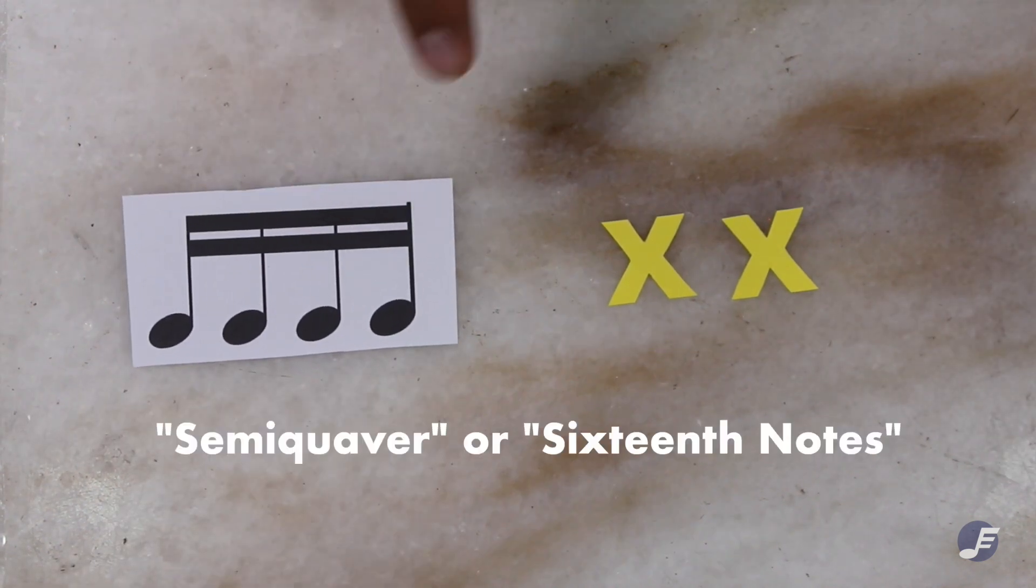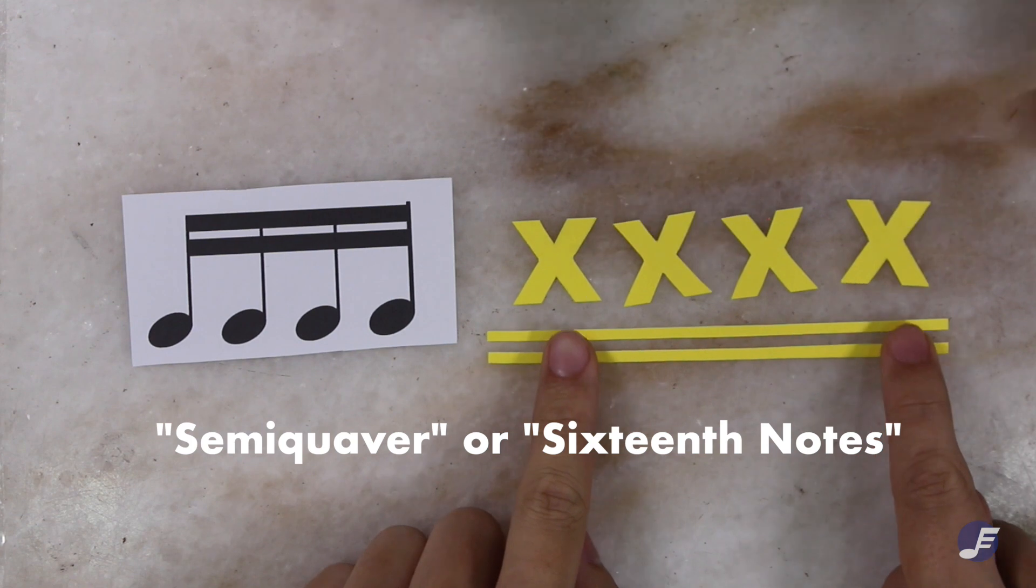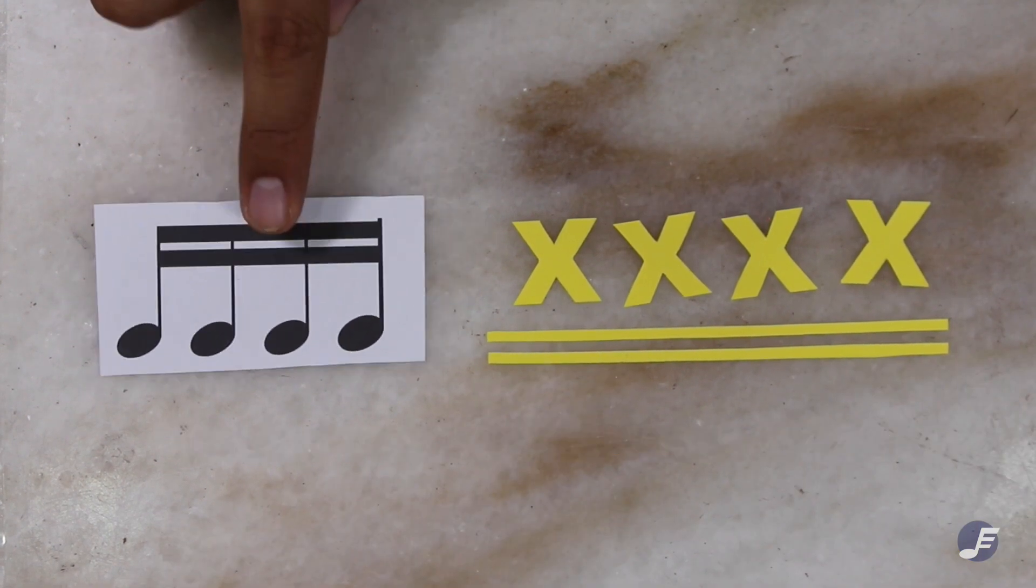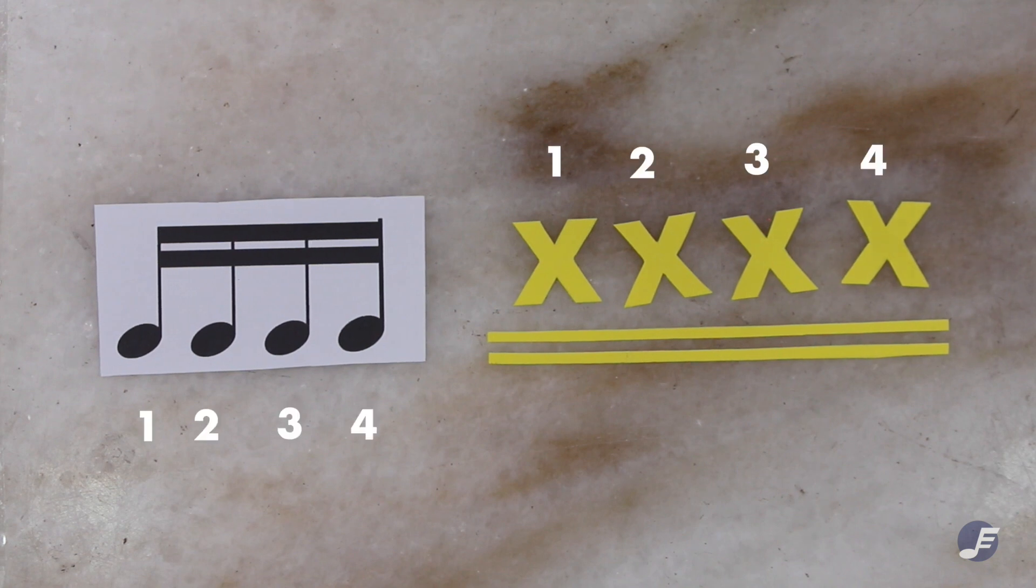A semi-quaver, or 16th note, is represented this way. Basically, the number of notes you see in a normal western score is exactly reflected on the jianpu along with the lines.